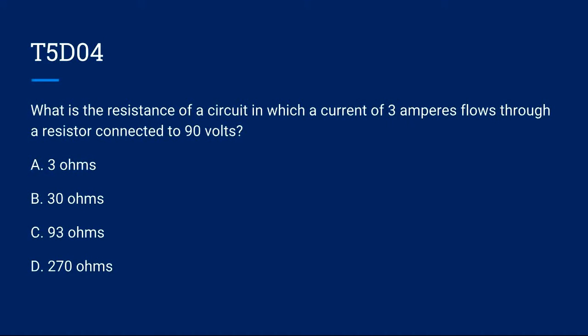T5D04: What is the resistance of a circuit in which a current of 3 amperes flows through a resistor connected to 90 volts? A. 3 ohms, B. 30 ohms, C. 93 ohms.